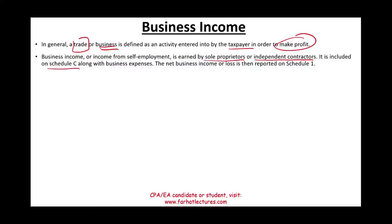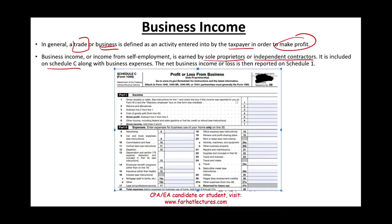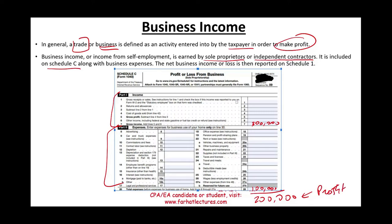To report this money, you prepare Schedule C, reporting your income along with any related business expenses. Schedule C has Part 1 for income and Part 2 for expenses. For illustration, assume you reported gross income of $300,000 and expenses of $100,000 — that gives you a net profit of $200,000 from whatever business you are engaged in.